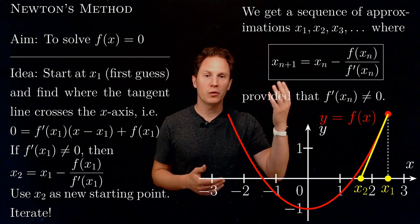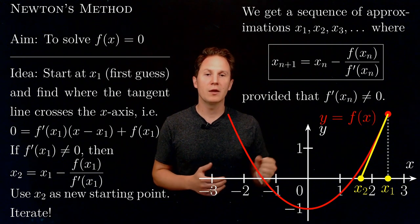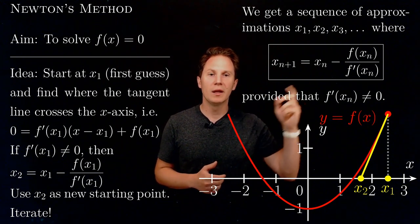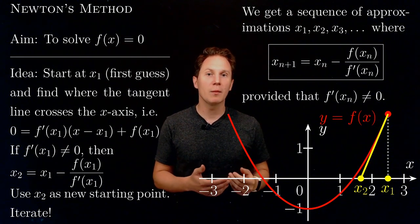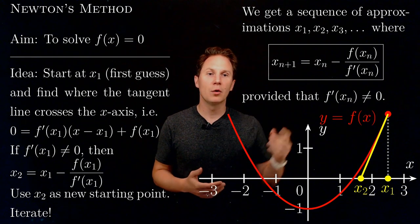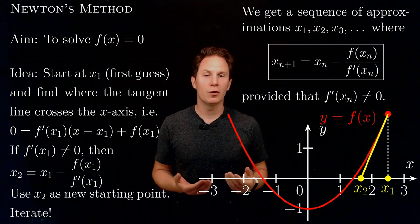The n+1 term in the sequence, the n+1 approximation, xₙ₊₁, would be xₙ - f(xₙ)/f'(xₙ), provided that all of these derivatives in the denominator do not vanish, are not zero.